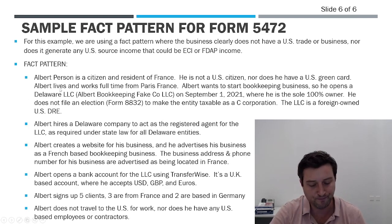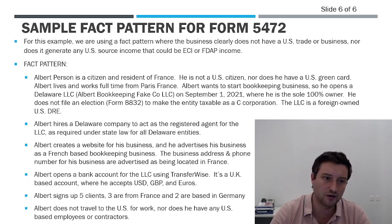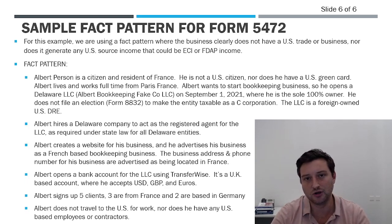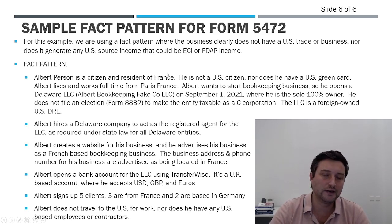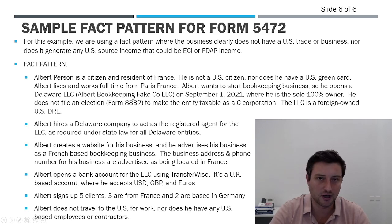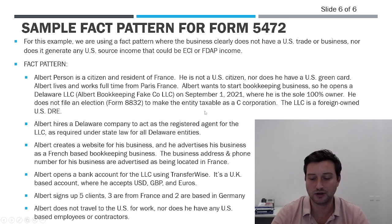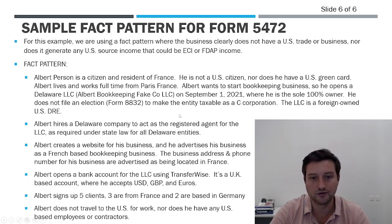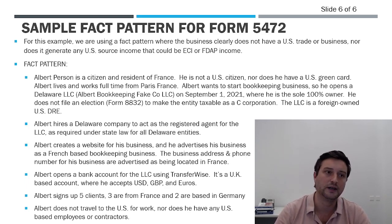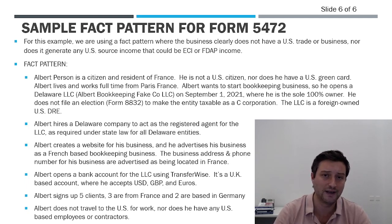Here's our example. We've got Albert Person — obviously a fake person. He's a citizen and resident of France. He's not a U.S. citizen, nor does he have a U.S. green card, and he doesn't meet the substantial presence test. So Albert in no way is a U.S. person for federal tax purposes. Albert lives and works full-time from Paris. Now Albert wants to start a bookkeeping business. He opens a Delaware LLC — he calls it Albert Bookkeeping Fake Company LLC — and he launches it in September 2021. He's the sole 100% owner. By default it's a disregarded entity. He decides not to make an election via Form 8832 to be taxed as a C-Corp. If you make that election, this tutorial is not for you.